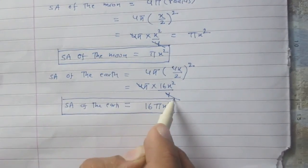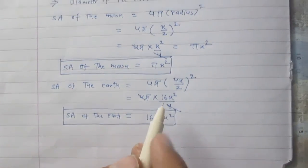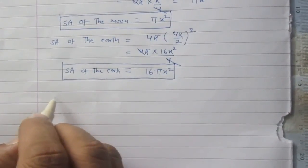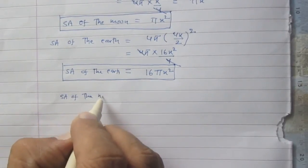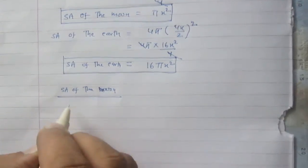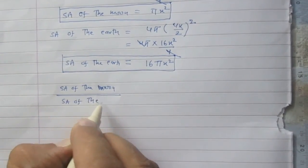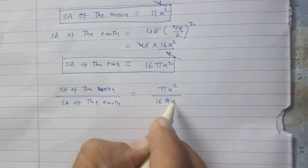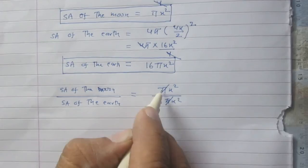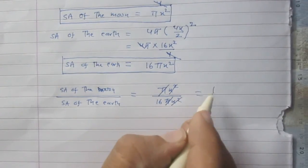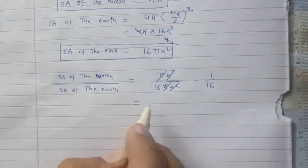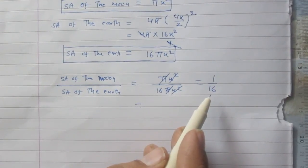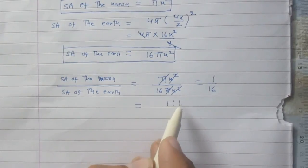Now we are to find the ratio of their surface areas. Since the diameter of the moon is mentioned first, we take the ratio as surface area of the moon upon surface area of the earth. It is πx² upon 16πx². Pi cancels with pi and x² cancels with x², and you get 1 upon 16. So the surface area of the moon upon surface area of the earth is 1 upon 16, or the ratio of their surface areas is 1:16.